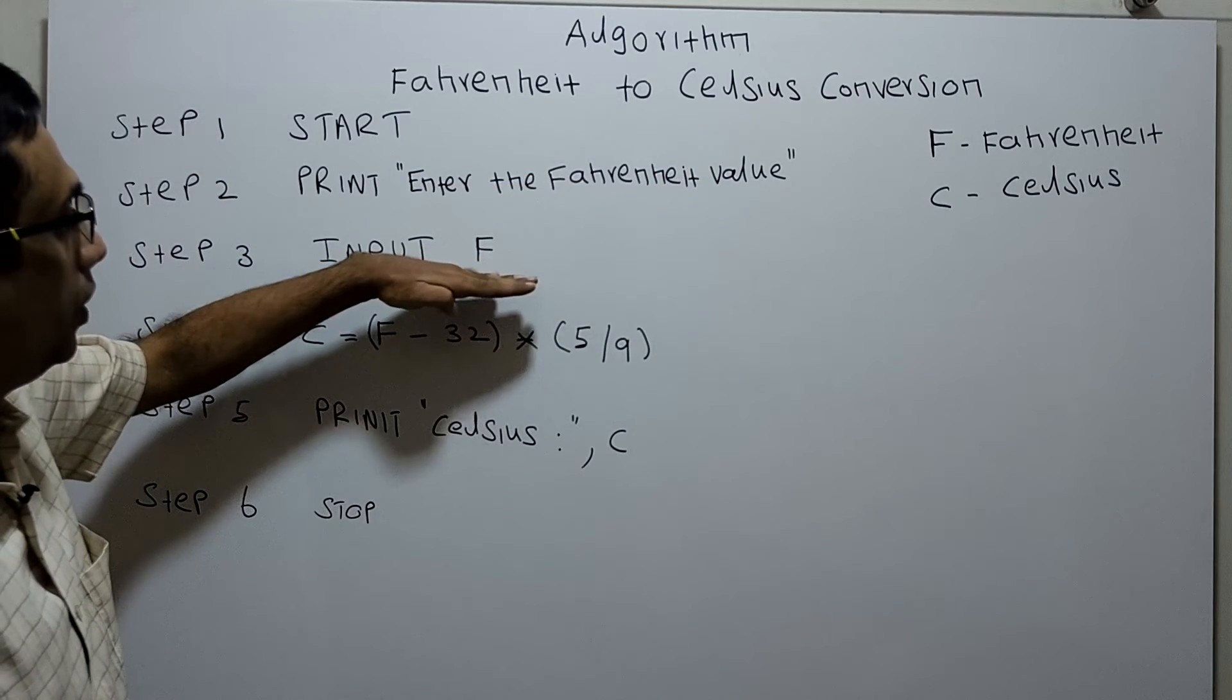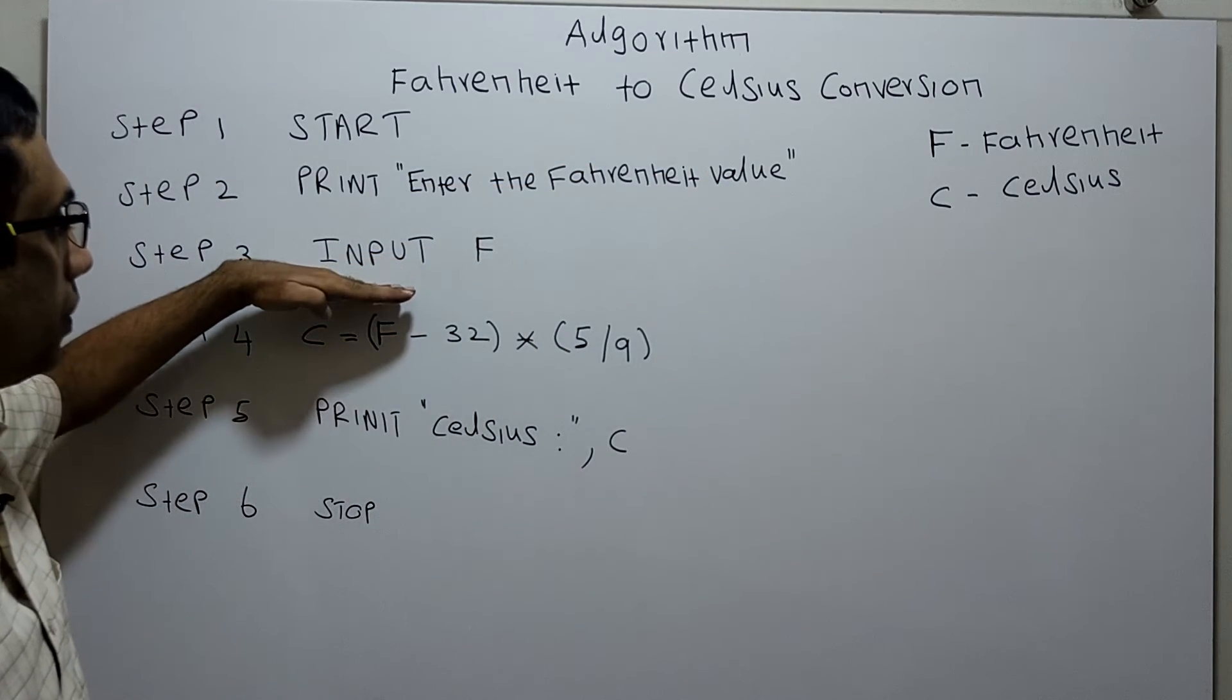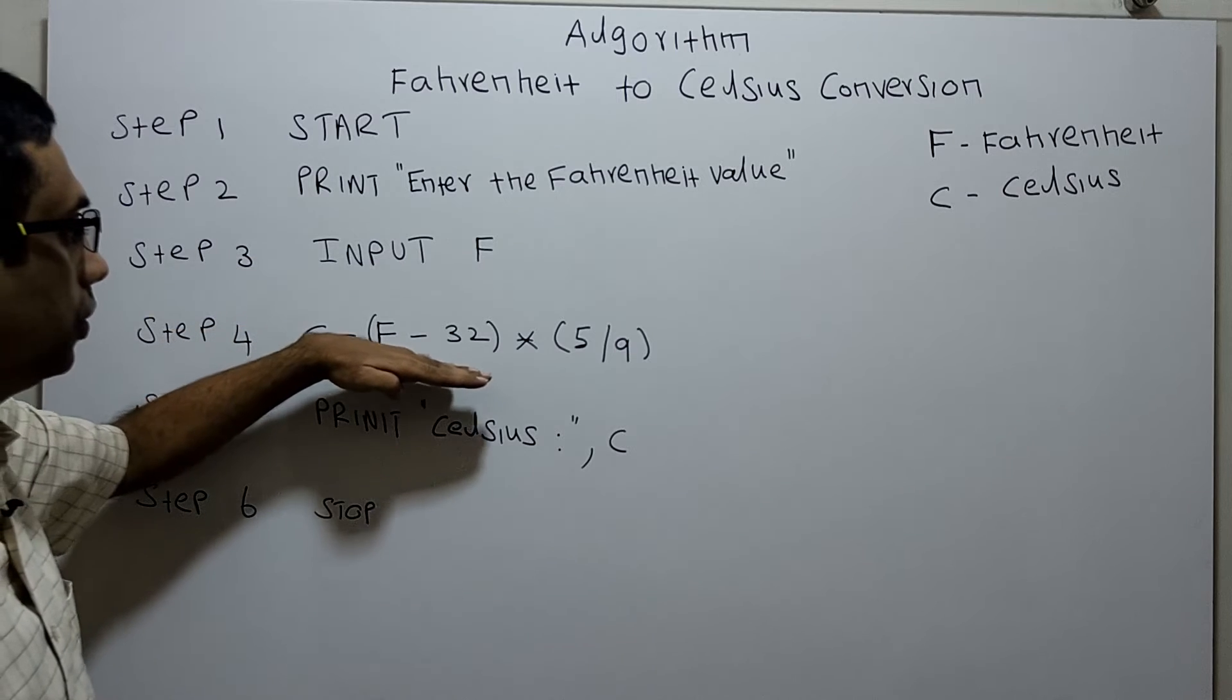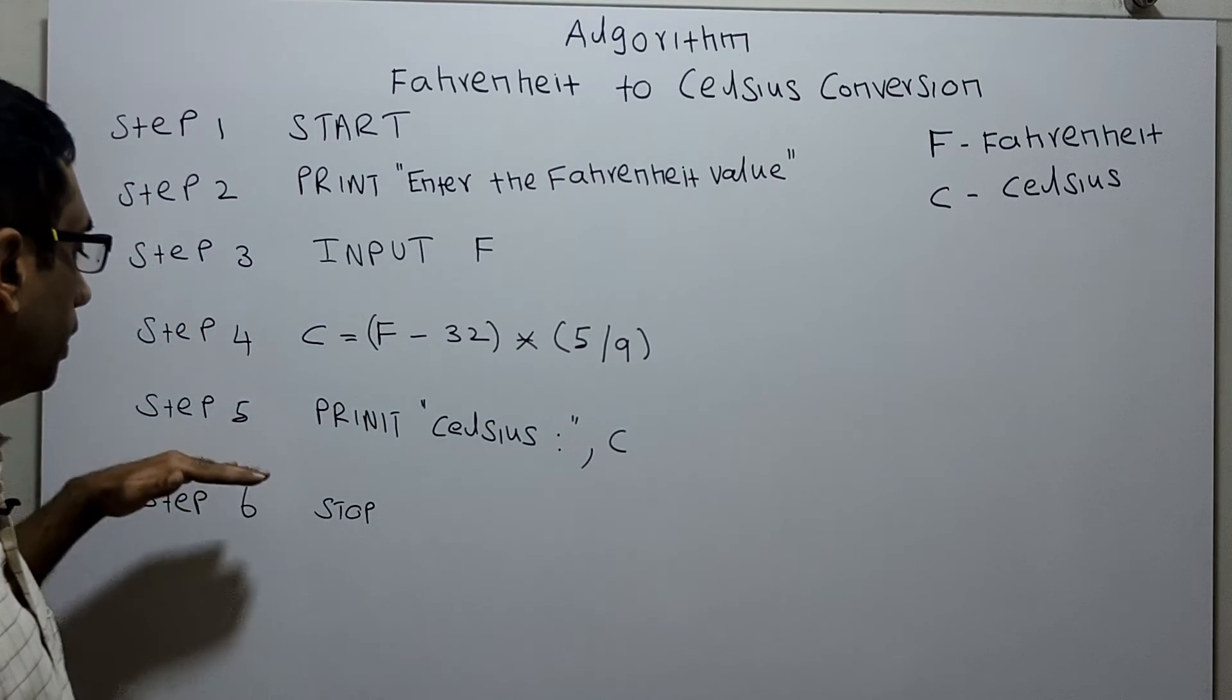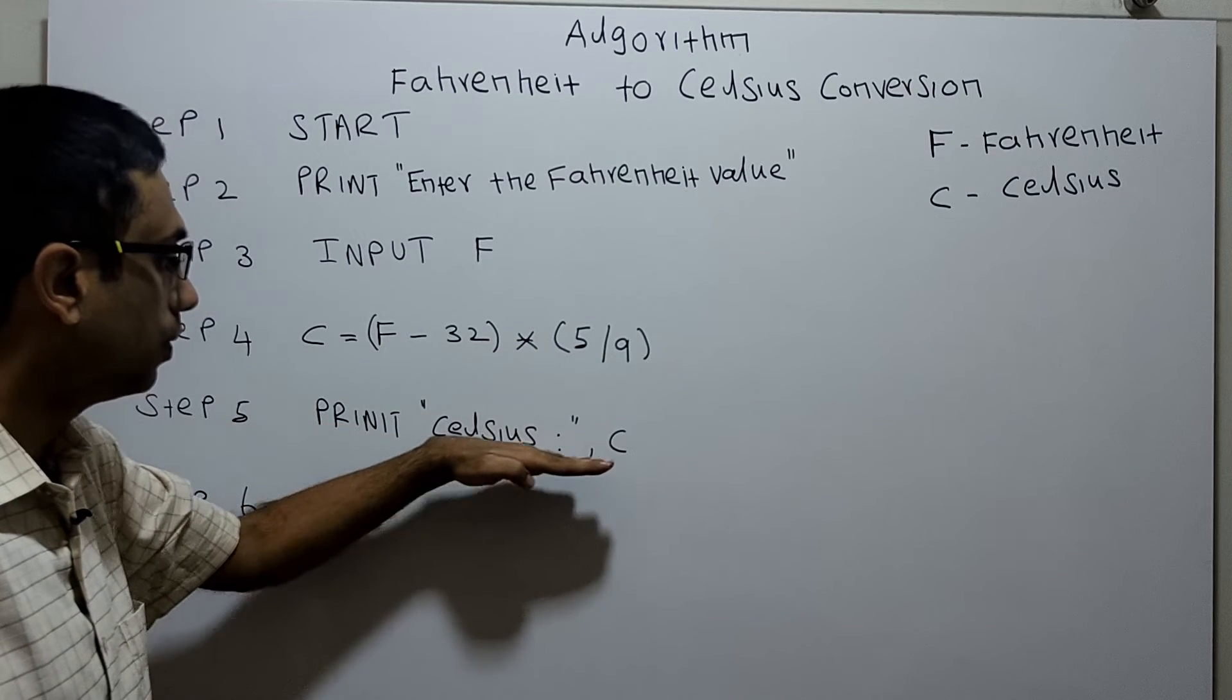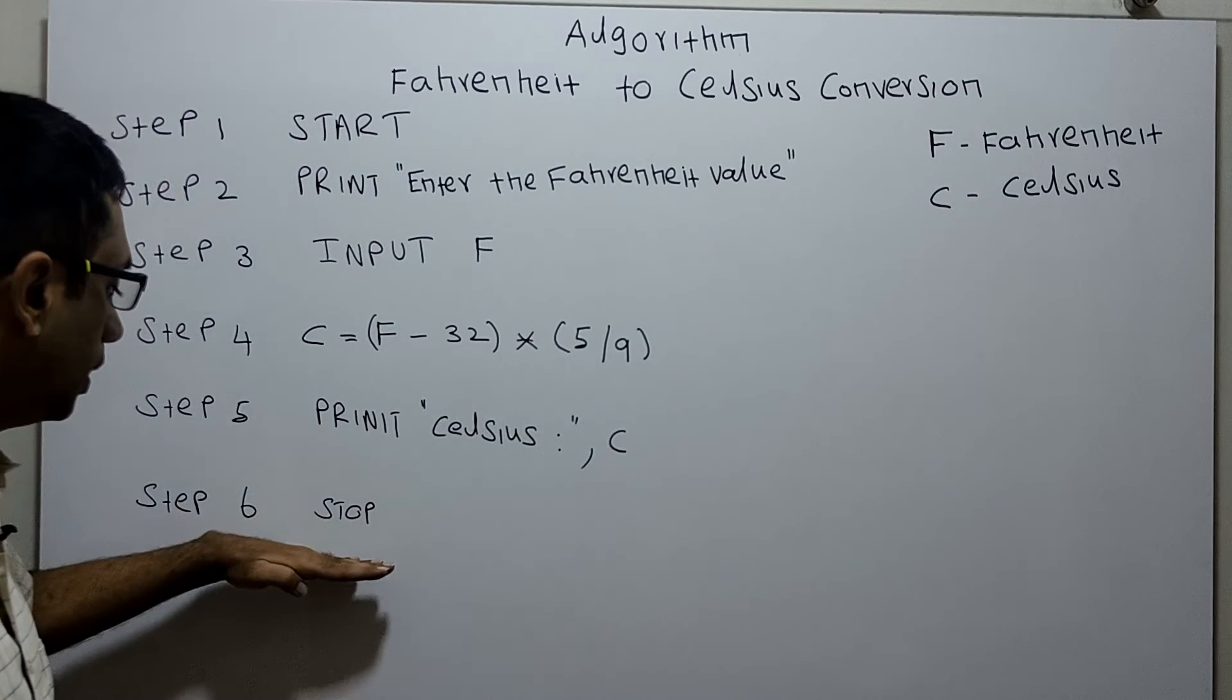Store the value in the variable F. The input statement is used to receive input from the user and then convert it to Celsius. The formula is F minus 32 multiplied by 5 divided by 9. Step five prints Celsius colon followed by the value of Celsius. Step six is the logical end of the algorithm.